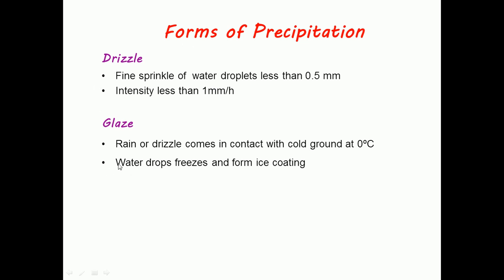Talking about glaze, rain or drizzle comes in contact with cold ground at 0 degrees Celsius. Water drops freeze and form ice coating which is called glaze.